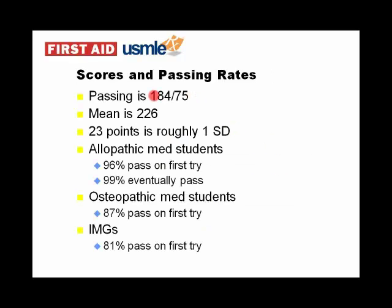Let's talk about passing and failing. As with the Step 1, there are two numerical scales — both are scaled scores, not raw numbers or percentiles. They're scaled to a curve based on a reference group. The three-digit passing threshold is 184, which has been going up every three or four years. The two-digit passing threshold is 75, and it has always been 75. The reason there are two scales is because in some states the passing threshold was designated as 75 by state-legislated mandate rather than by the NBME themselves.